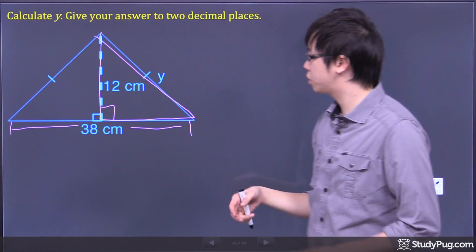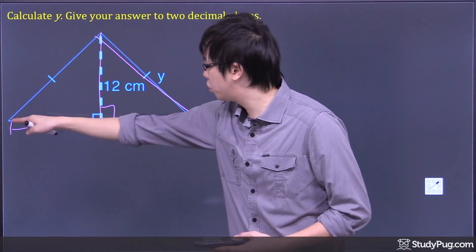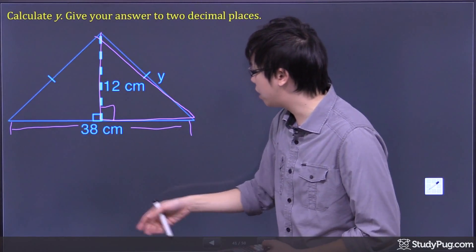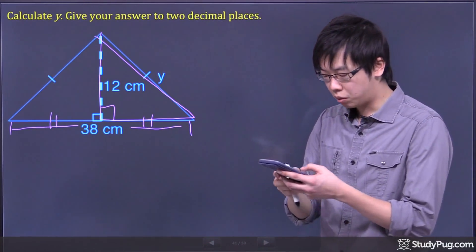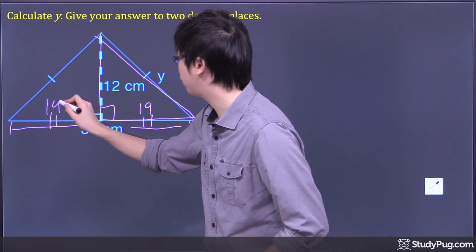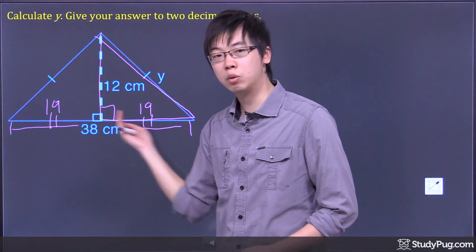So what we need to do is we just have to figure out some dimensions right here. We do know the entire base is 38, but if you just cut it right in half, that will give you this side and this side equally. So 38 divided by 2, we got ourselves 19 and 19. Hopefully that makes sense to you, because it's right in the middle of the triangle, so these two sides are equal.